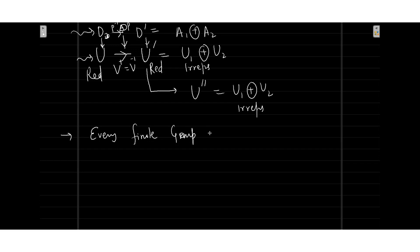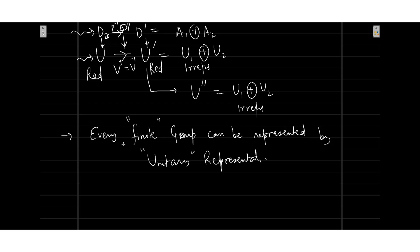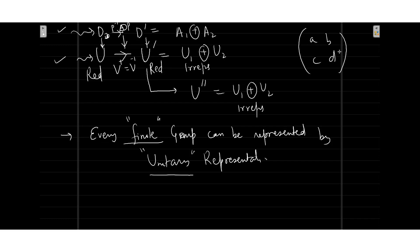What I am writing now is that every finite group can be represented by unitary representations. This means that whenever groups are finite, it is always possible to find unitary matrices to represent them. If all the unitary matrices are involved in a representation, even the diagonalizing matrix is also unitary, so unitary matrices take care of everything. Given a matrix with elements A, B, C, D — how will you figure out it is a unitary matrix?